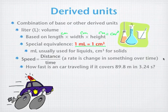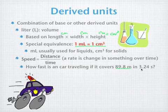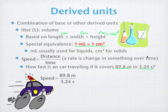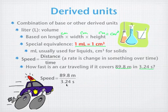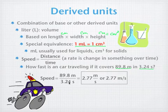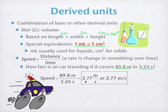And we can calculate it by just taking the distance. So this car is traveling 89.8 meters in 3.24 seconds. How fast did it go? So we put the distance on the top and the speed, the time on the bottom. And then we do the math. So we get 2.77. Now, this is meters over seconds. This kind of a unit turns into these per units. We'll talk more about them later on, meters per second.